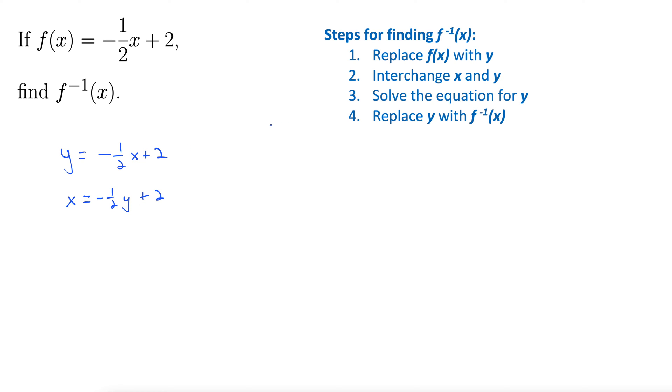Step three. Solve for y. All right, let's do that. Let's subtract 2 from both sides. That gives us x minus 2 equals negative one-half y.